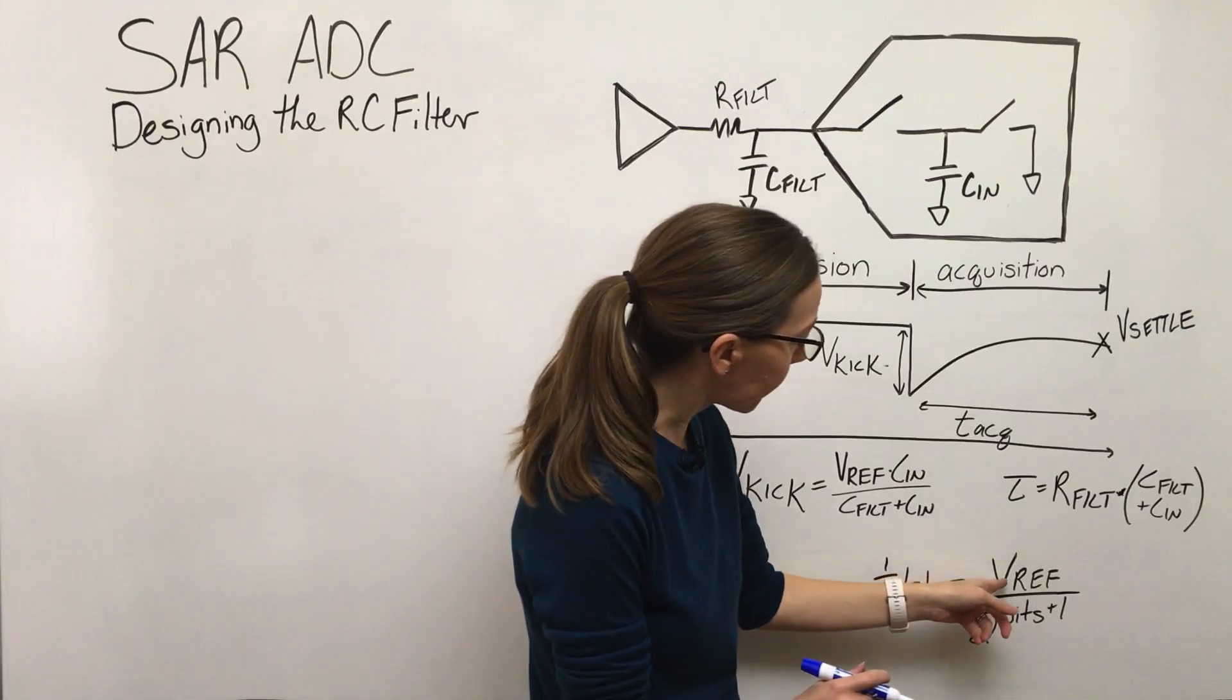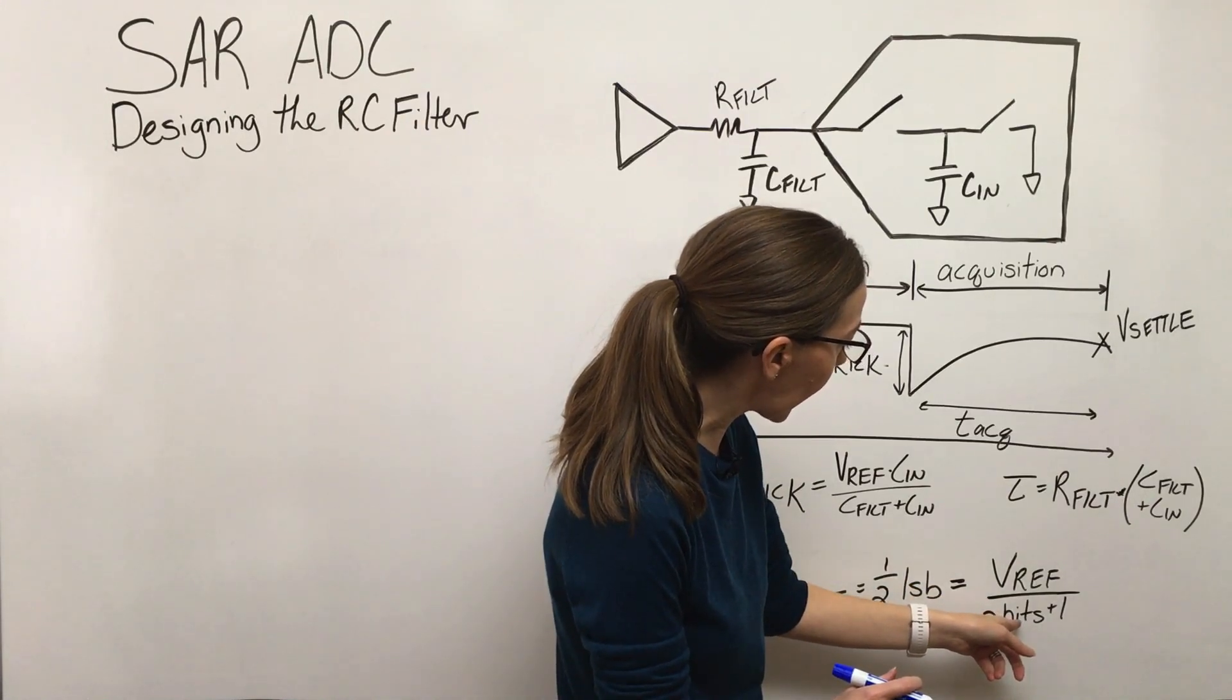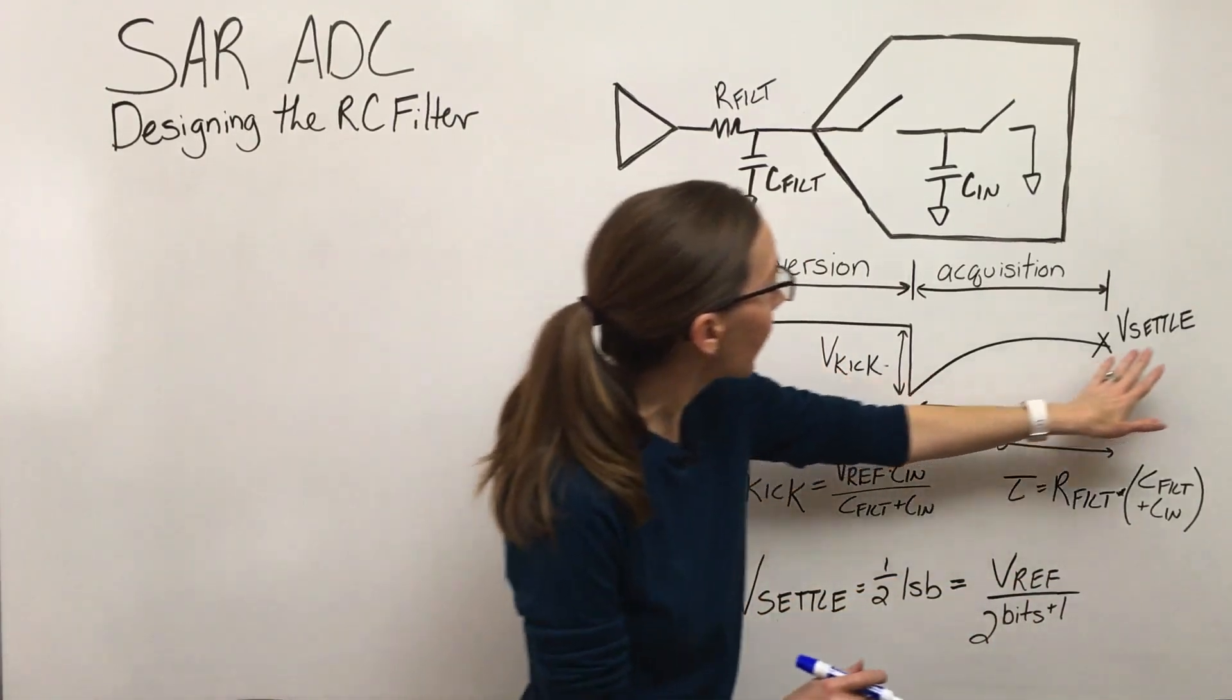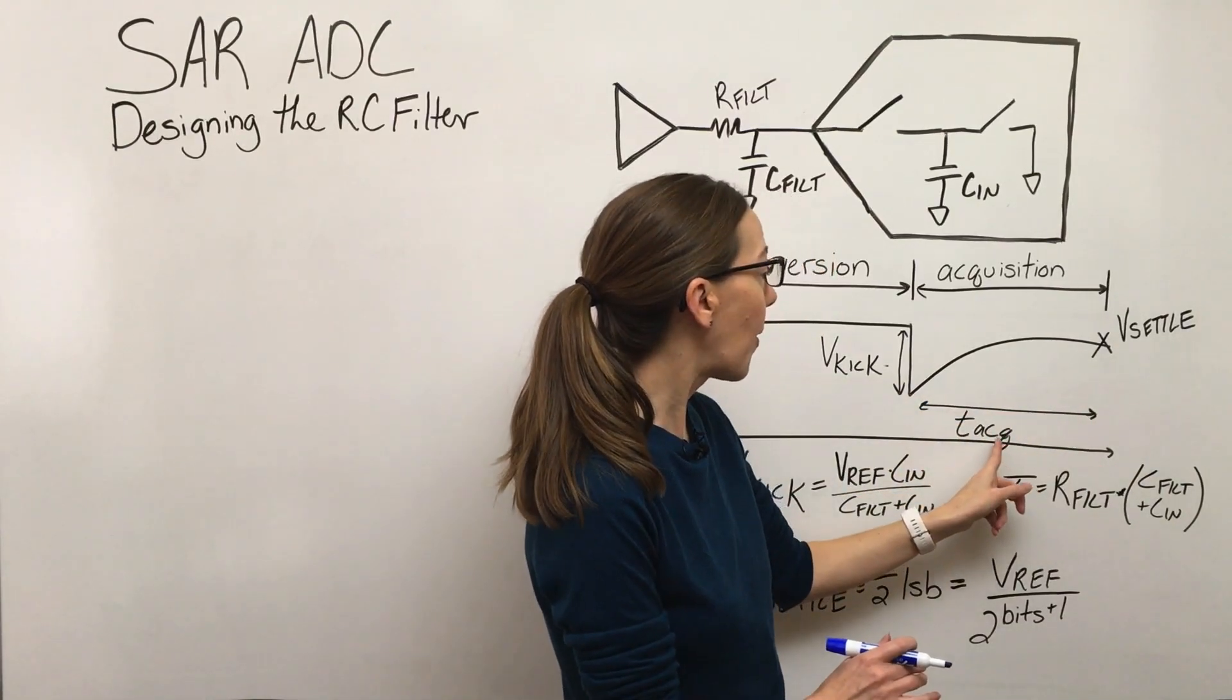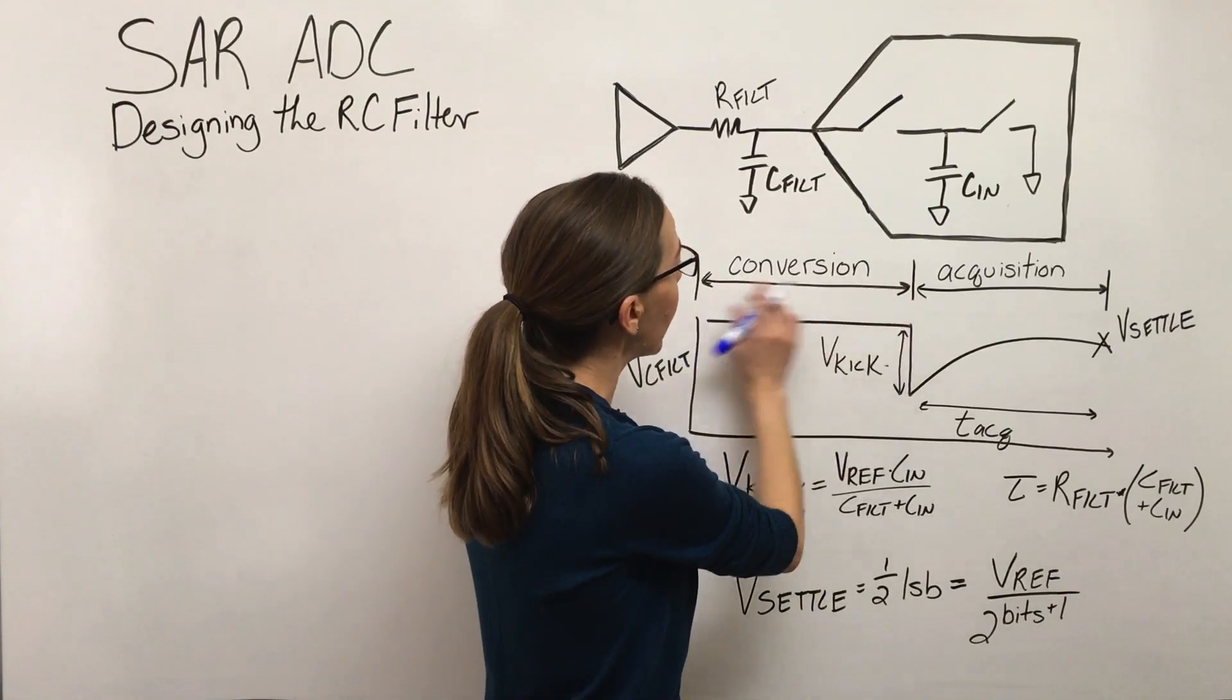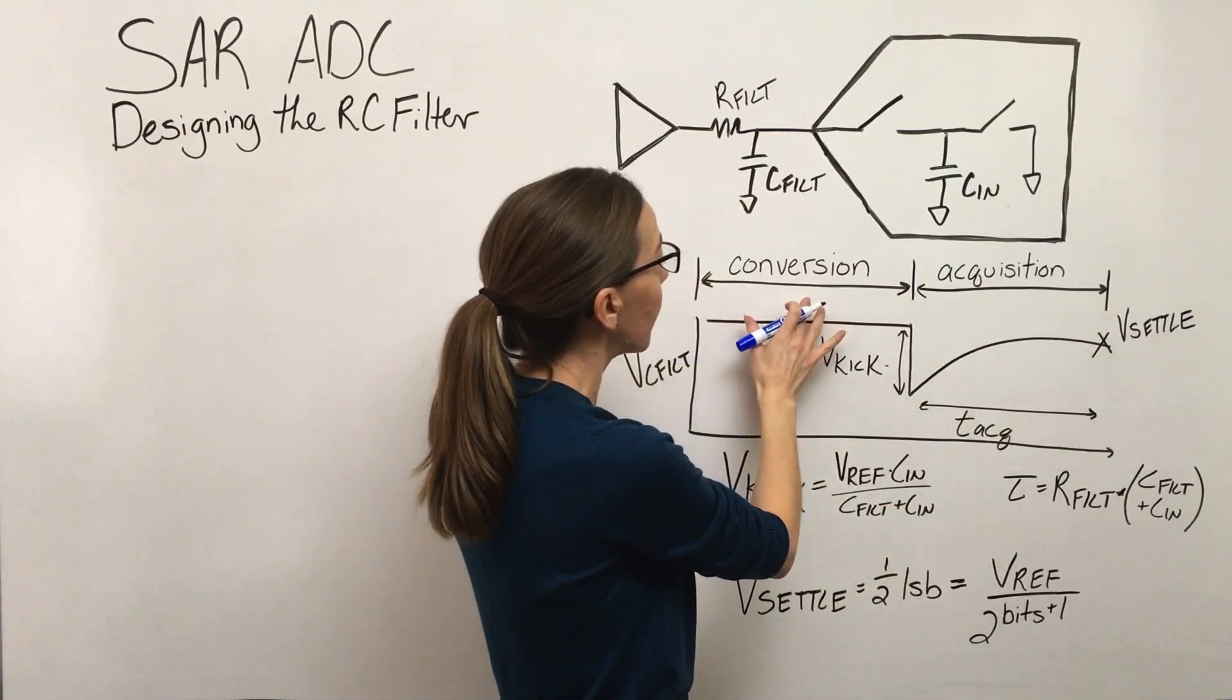And so just a simple equation for that is the reference voltage of the ADC and then using the resolution of the ADC plus one in this equation here. So we've got a number for this, we've got a number for this, we know that this needs to settle within the acquisition time. This is specified in the data sheet. And actually, what you'll often find specified in the data sheet is the conversion time is what's fixed.